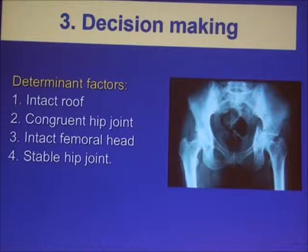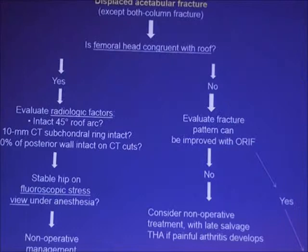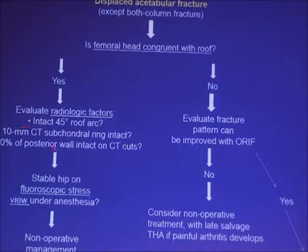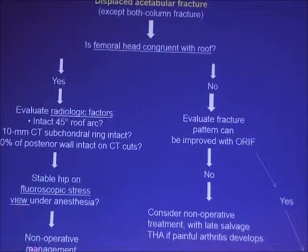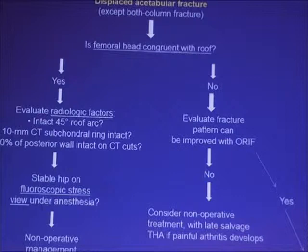The determinant factors are: intact roof, congruent hip joint, intact femoral head, and stable hip joint. In displaced acetabular fractures except both-column fractures, if the femoral head is congruent with the roof, we evaluate the radiological factors: roof arc angles, CT scan 10 mm subchondral ring, and more than 60% of the posterior wall intact. If the hip is stable under anesthesia on fluoroscopic stress test, we may decide on non-operative treatment. Otherwise, we decide to operate — but we must ask: can we achieve and maintain anatomical reduction with internal fixation? If yes, we do open reduction and internal fixation. If no, we may choose non-operative treatment with late salvage by total hip replacement.